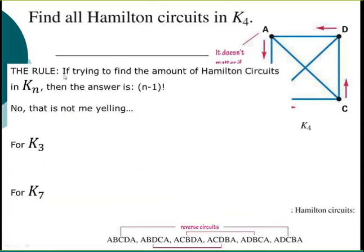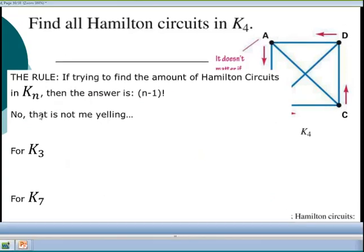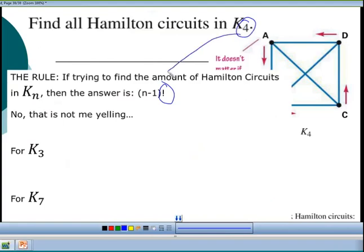There's a rule - this is the easiest way you can say it. If you're trying to find the amount of Hamilton circuits in K_n, then the answer is (n-1)! No, that's not me yelling, this is a factorial. You should have that button on your calculator - it looks like an exclamation mark.